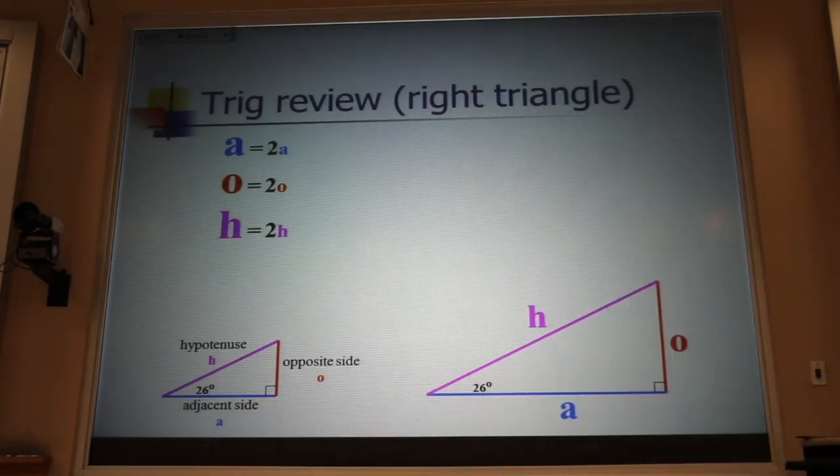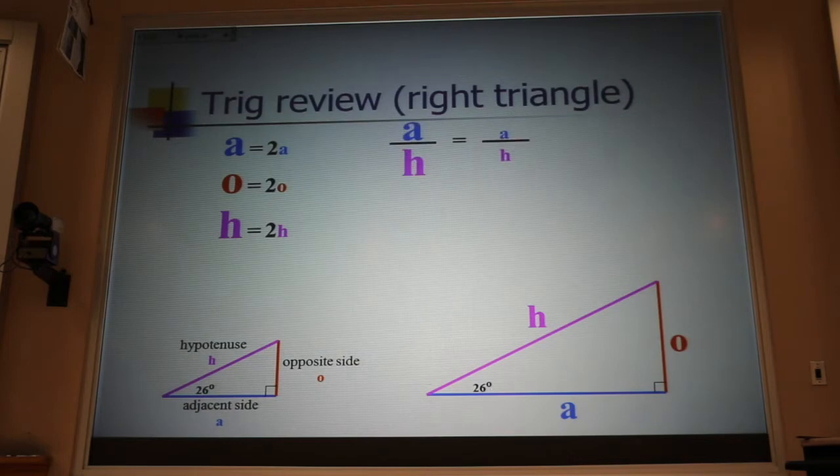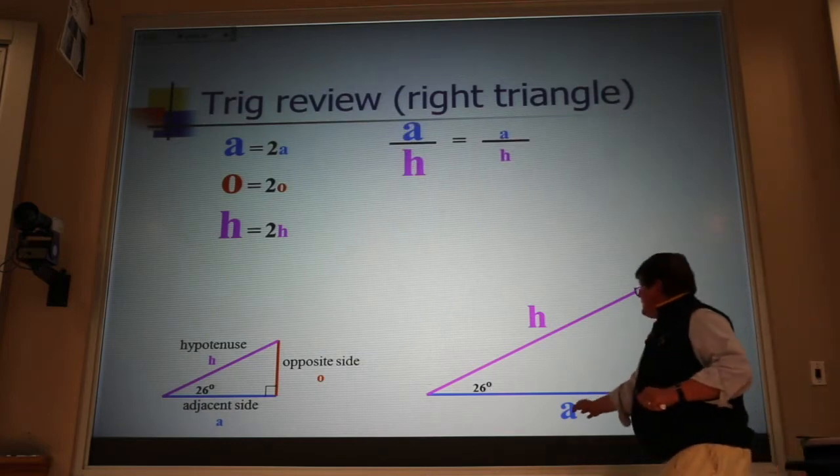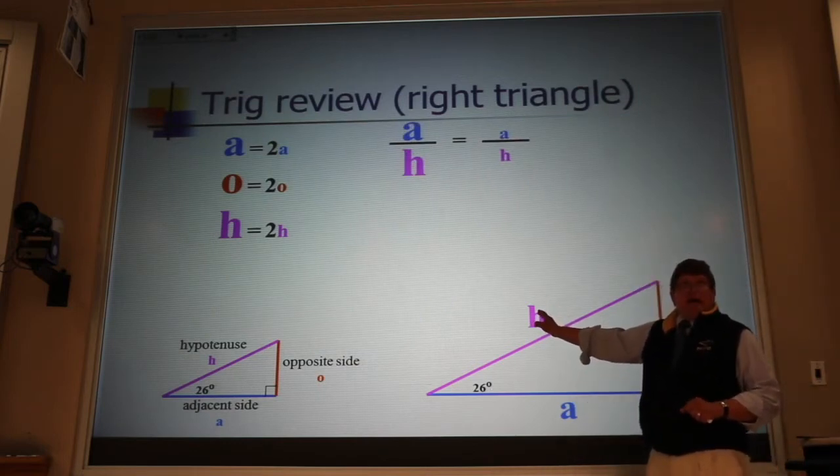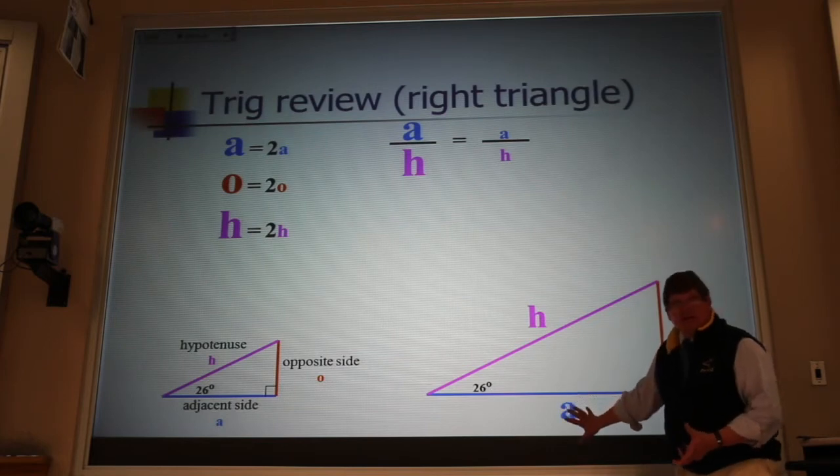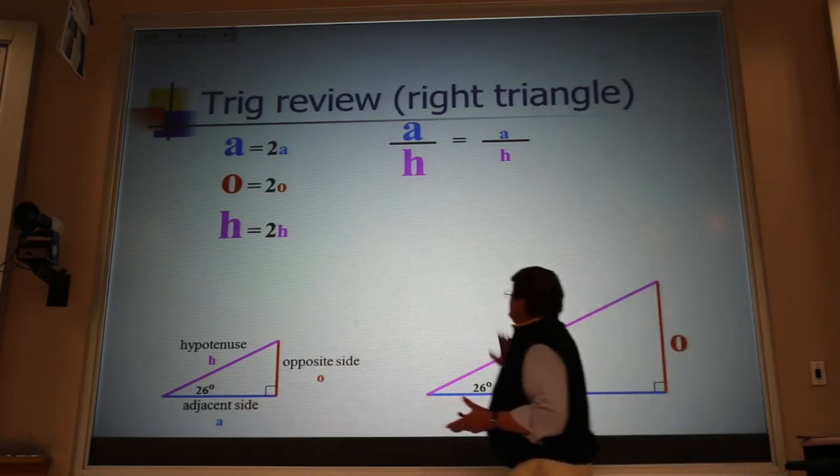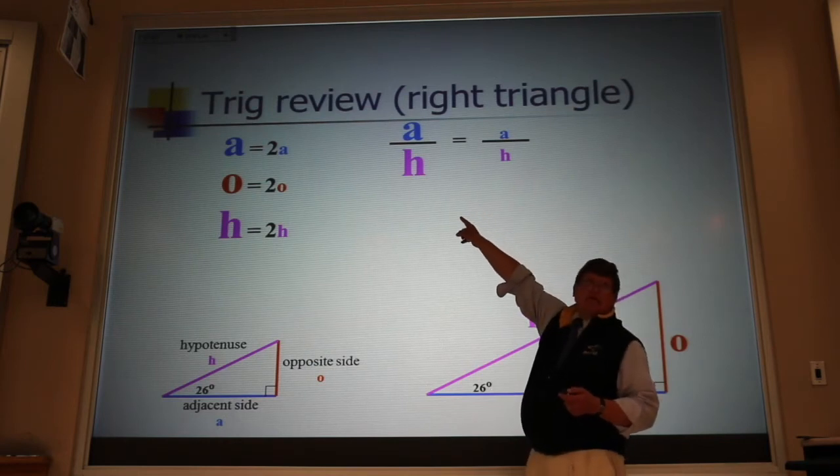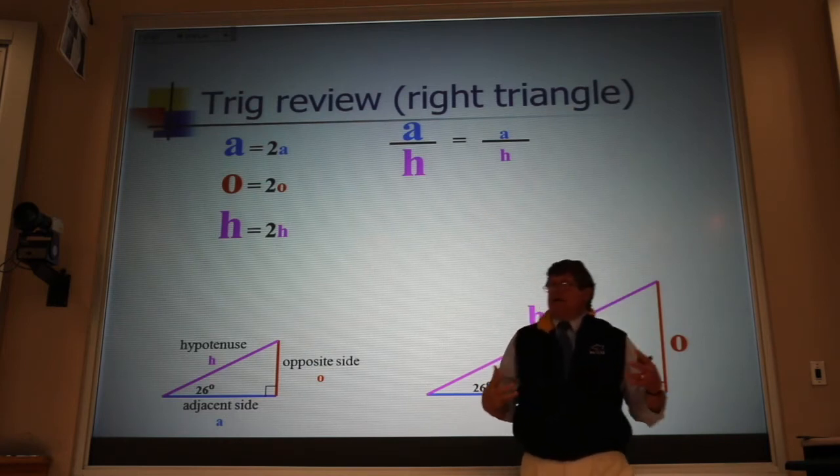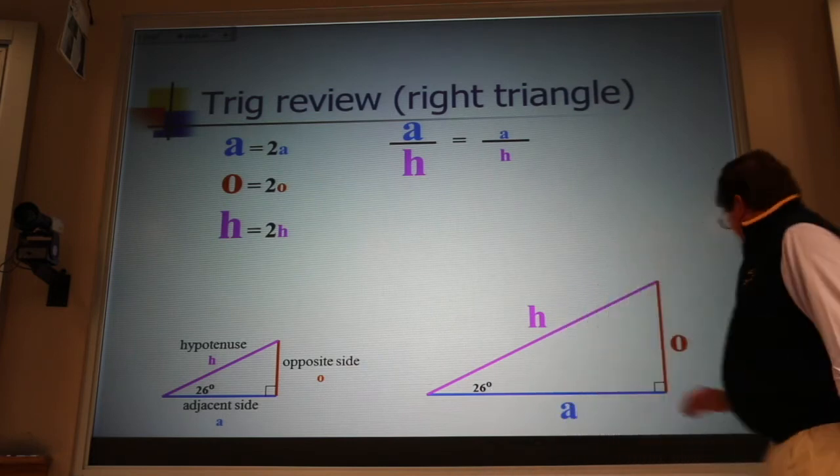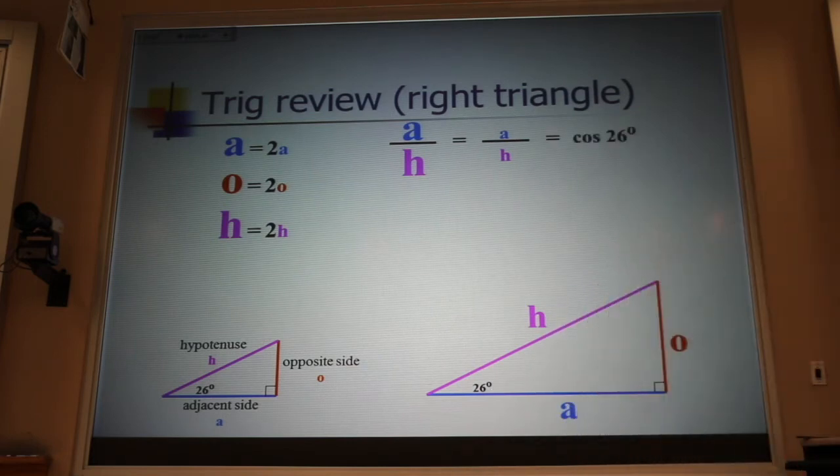Now, what this allows us to do is talk about the ratio between two sides. If I look at the ratio between the adjacent side and the hypotenuse, it doesn't matter whether I do it on this triangle or whether I do it on that triangle. If I do it on the big triangle, the twos are going to cancel. I'm going to get the same number on both triangles. And we call that number the cosine of 26 degrees. And it just happens to be somewhere near 0.9.